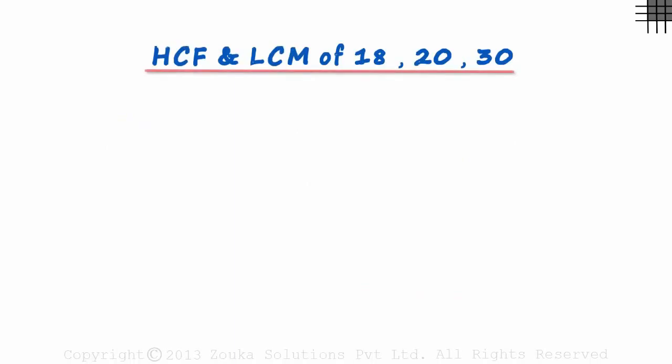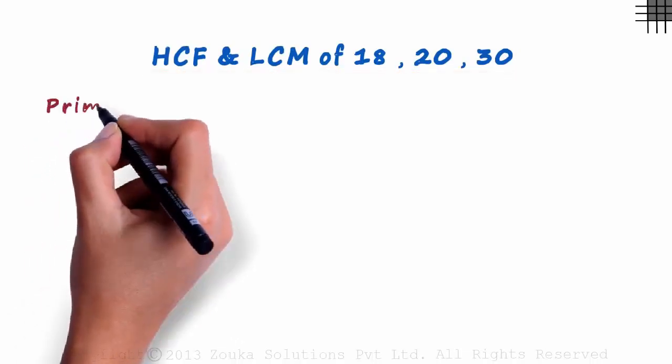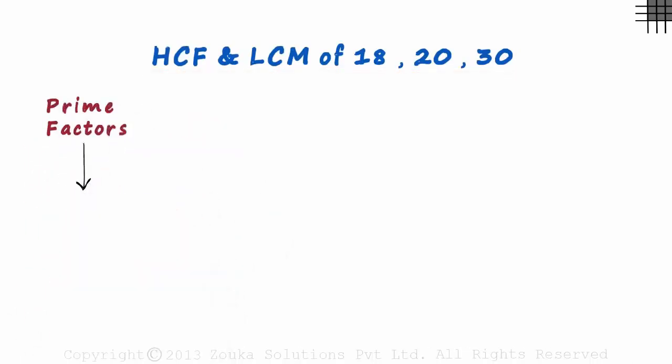We have to find the HCF and LCM of 18, 20 and 30. How do we find the HCF and LCM of three numbers together? The best way to do it is by reducing all numbers to its prime factors, and then write them in exponential form.